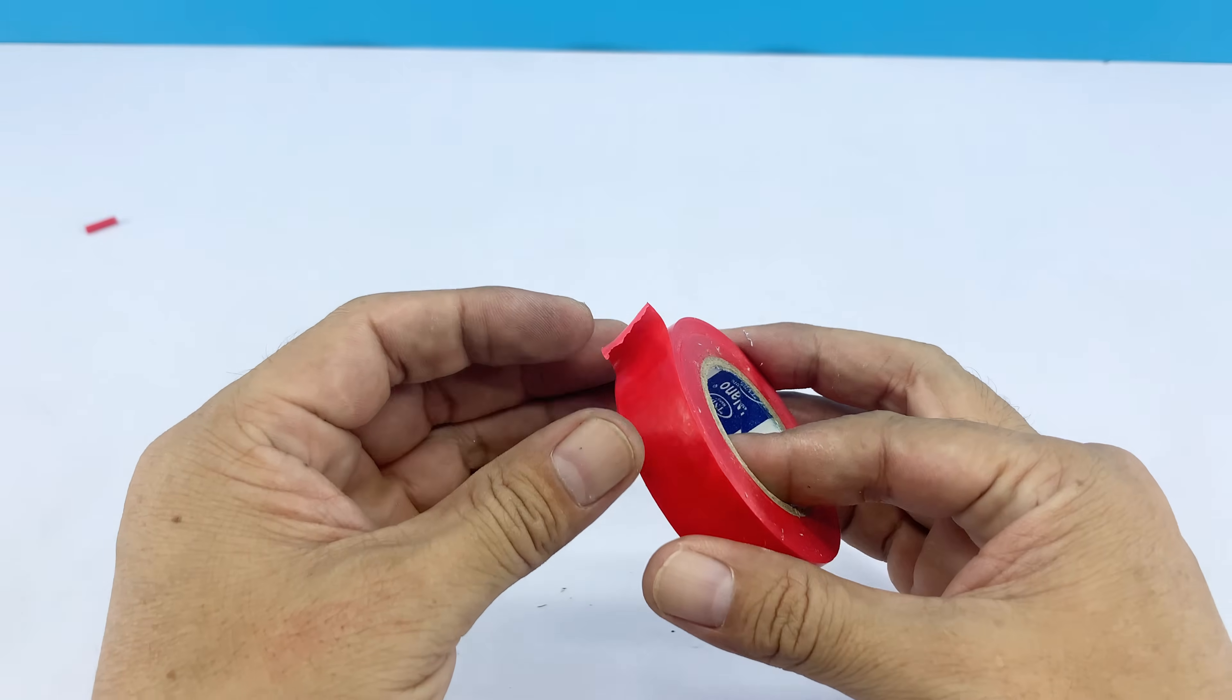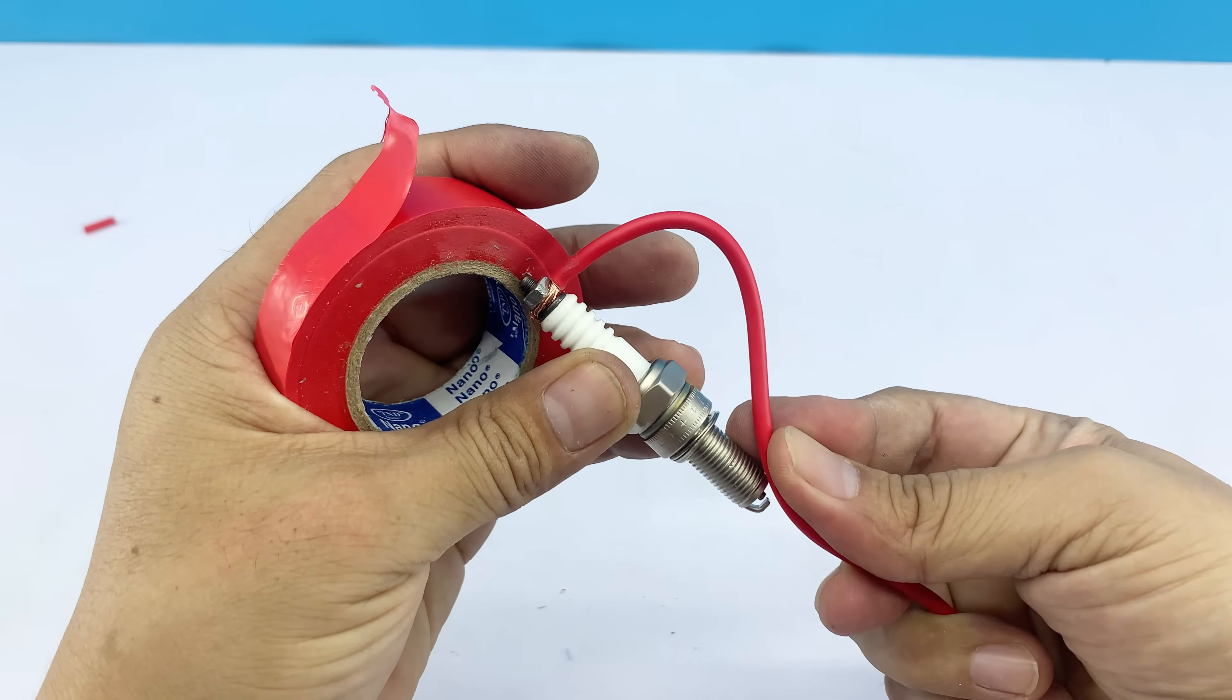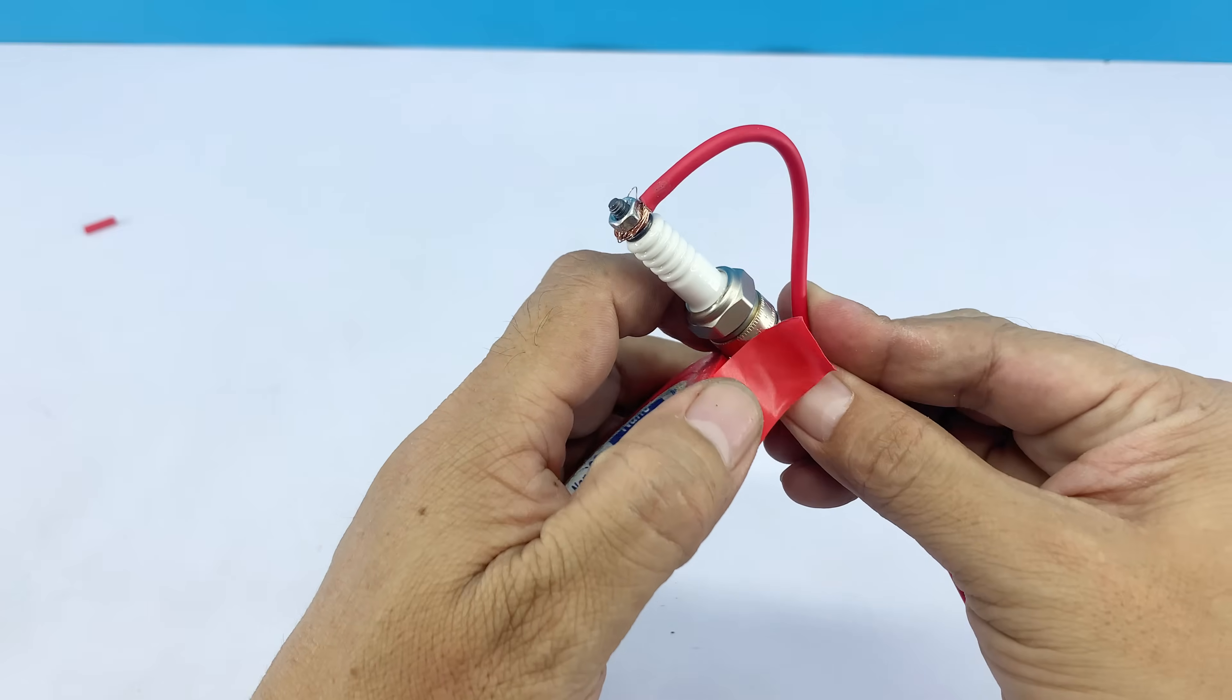Next, I wrap some tape around to secure the wire to the spark plug body, keeping the connection tight and preventing the wire from moving during use.